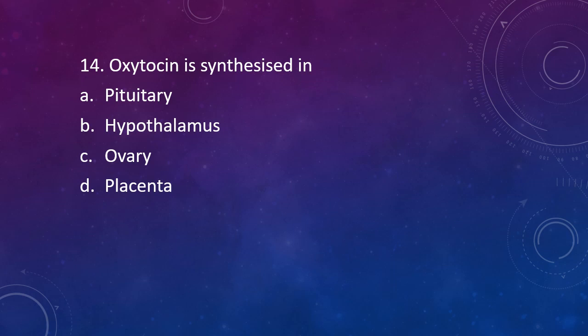Question number 14. Oxytocin is synthesized in: pituitary, hypothalamus, ovary, or placenta. The correct answer is Option B, hypothalamus, and it is released by posterior pituitary.